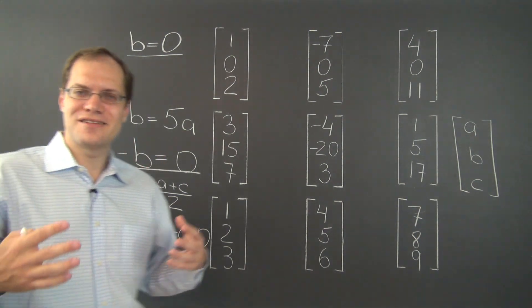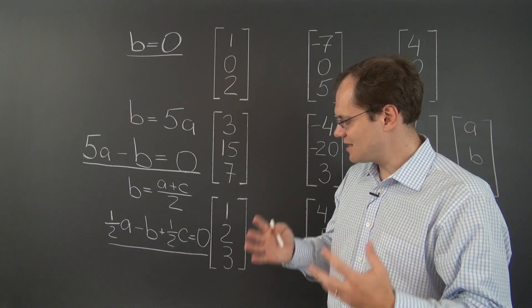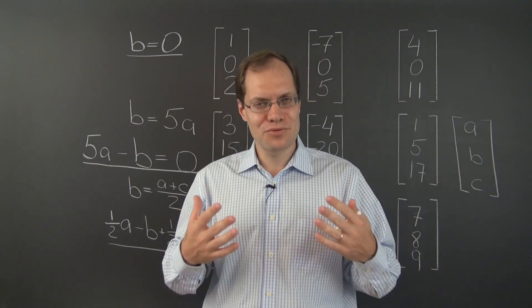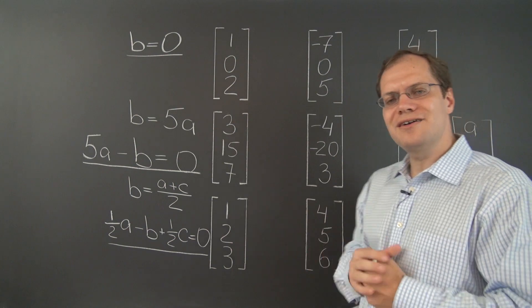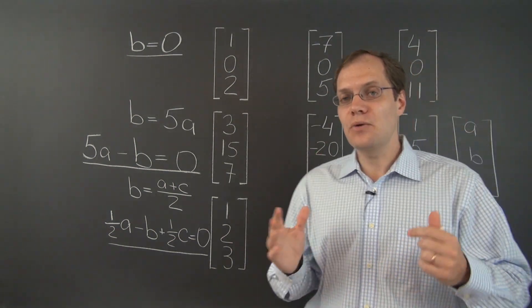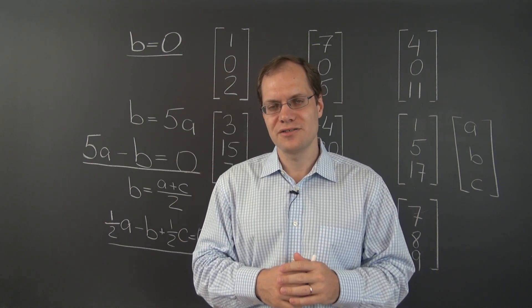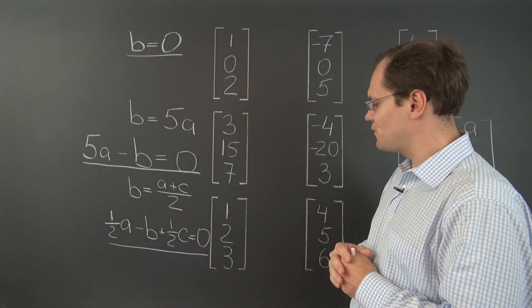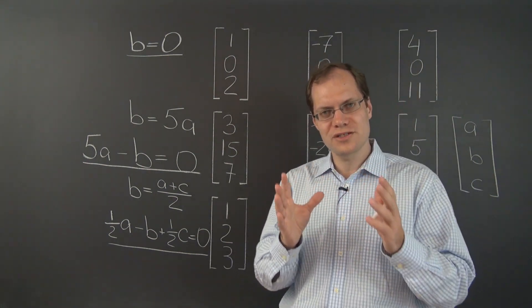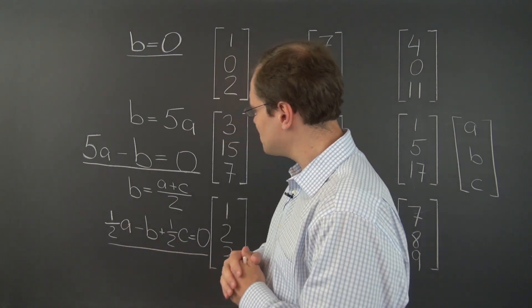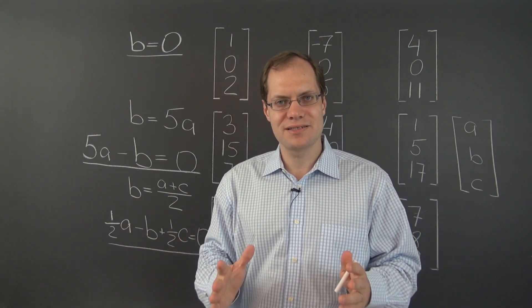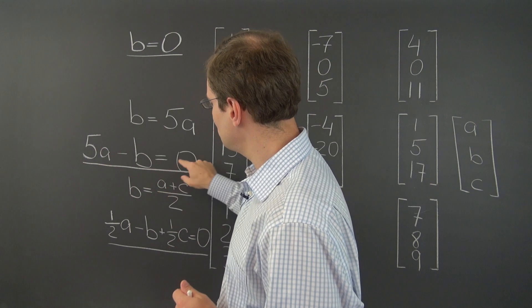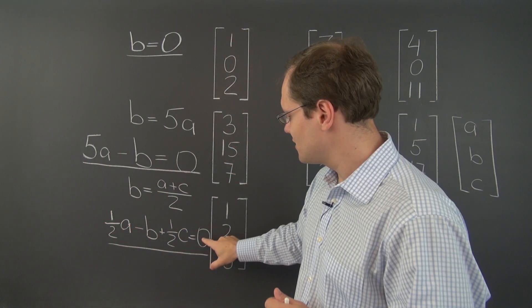That's the common template we were after. All linear properties in Rn can be written following the same pattern, despite the very different words used to describe them: 'middle entry equals zero,' 'middle entry is five times the first,' 'middle entry is the average of the other two.' The algebraic expressions all follow the same template: a linear combination of coefficients equals zero.